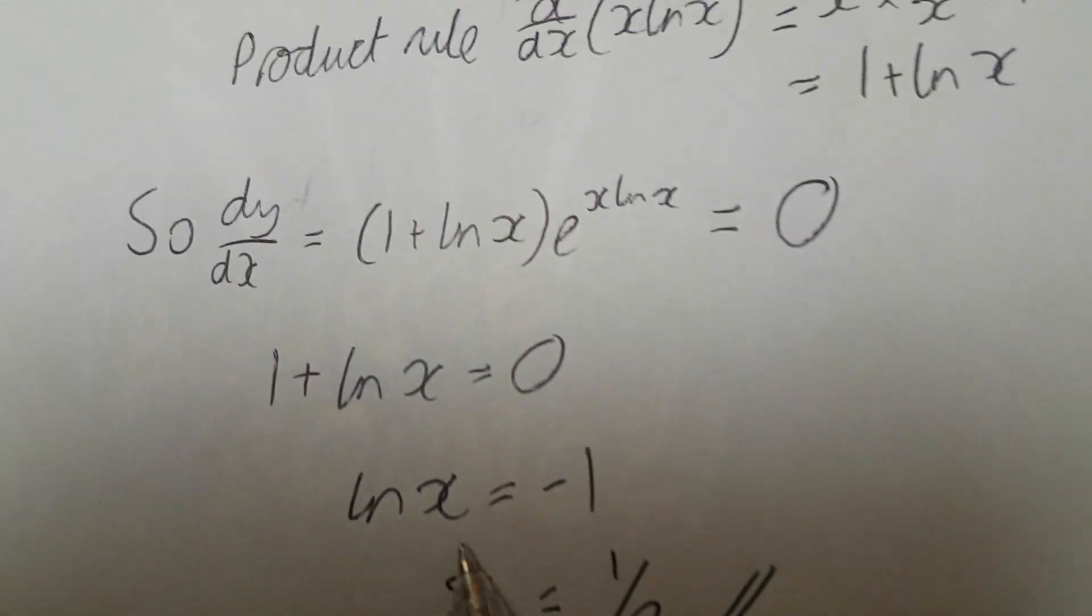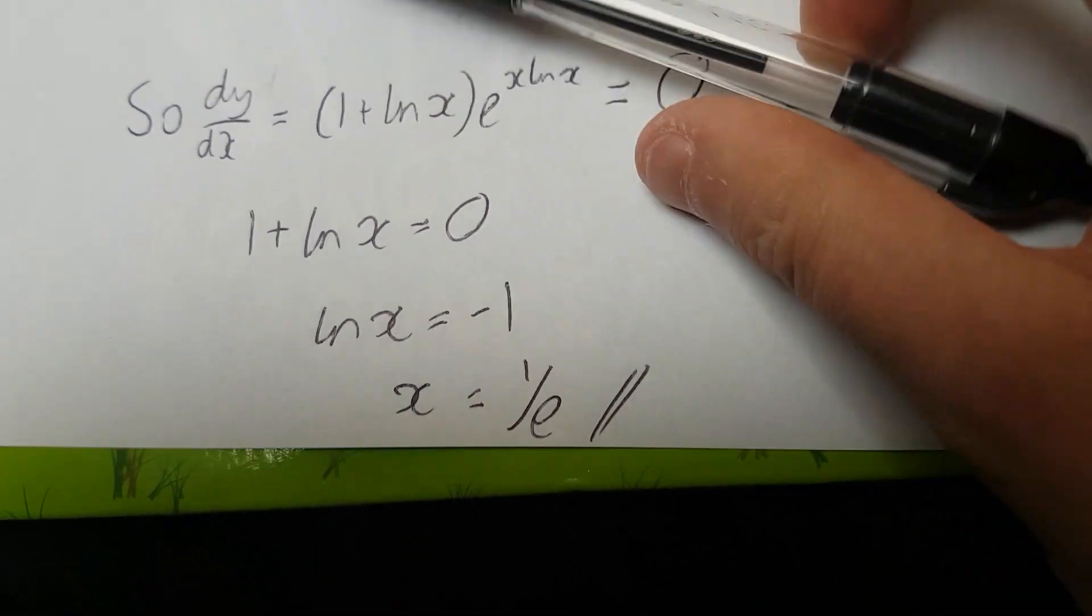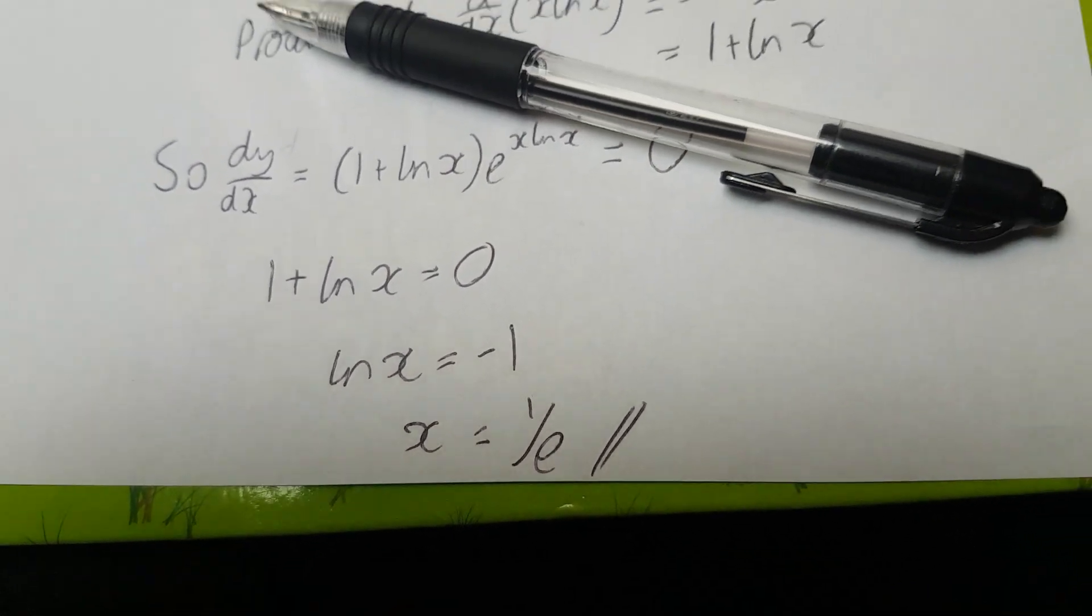Move the 1 to the other side, natural log x equals negative 1. Therefore, x equals 1 over e, or e to the minus 1. Both would be valid. Thank you.